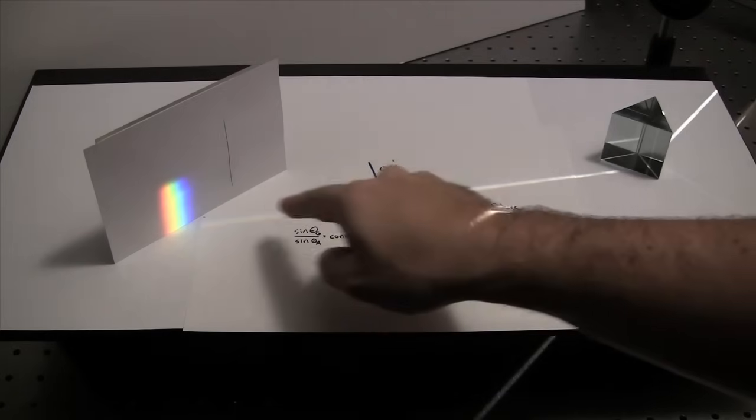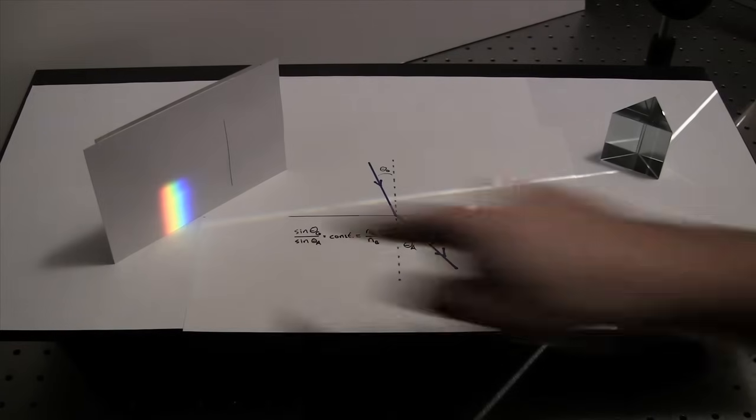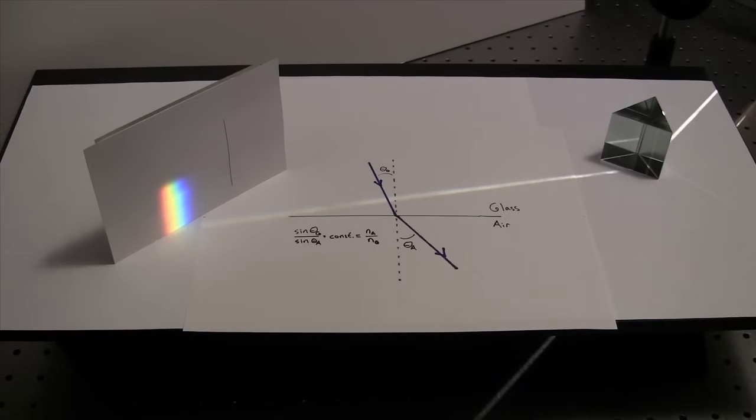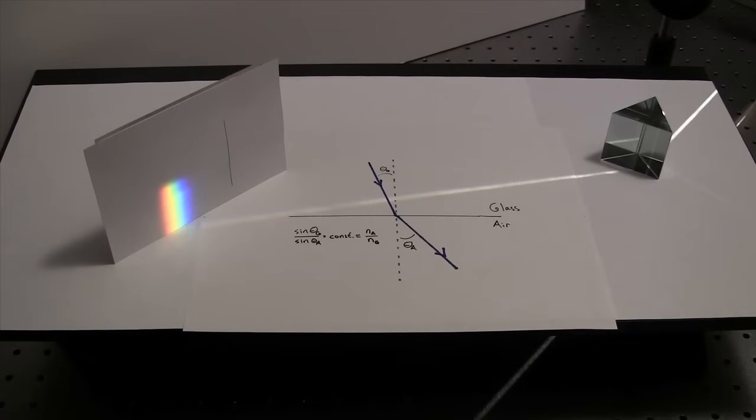So this led him to the conclusion that the white light entering the prism wasn't really white. It was a combination of all these different colors, and that all the prism was doing was separating them in angle by this varying refractive index.